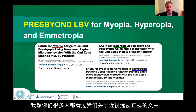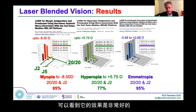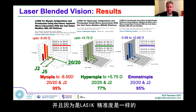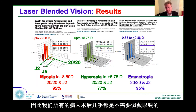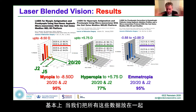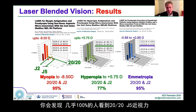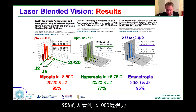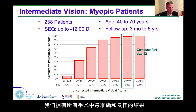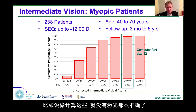Many of you have already seen our publications for myopia, hyperopia, and emmetropia, and the outcomes are superb. That's because we are taking advantage of the accuracy of LASIK — a very accurate procedure. Because Presbyond is LASIK, it has the same accuracy and controls cylinder with the same accuracy. Virtually all of our patients are spectacle independent virtually all the time. Taking all these statistics together, we have almost 100% seeing 20/20 and J5 for myopia, 95% up to plus 6 for hyperopia, and the emmetropes — 97% are seeing 20/20 and J5 newsprint.